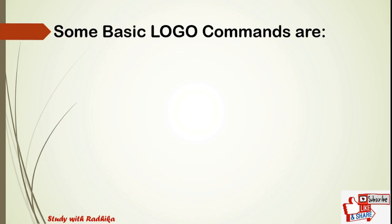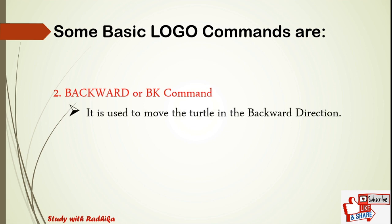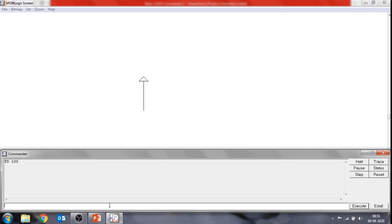The next basic command is the backward command or bk command. This command is used to move the turtle in the backward direction. It is necessary to specify the number of steps the turtle has to move back. Suppose you want to move the turtle by 100 steps in the backward direction, the command will be bk 100, then press the Enter key. The turtle comes back by 100 steps in the backward direction.